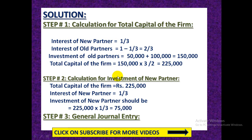Step 2 is to find the required investment — the cash the new partner should bring to join the firm. We take the total capital and multiply it by the new partner's interest share. For a one-third interest, Mr. C should bring 75,000 rupees.